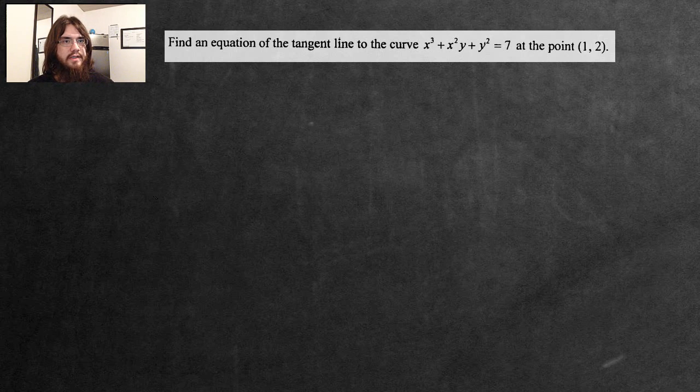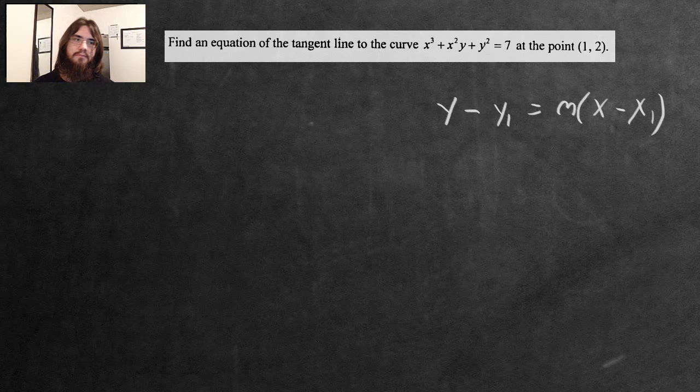Now the first thing we want to do is write the line equation, which is y subtract y₁, the first y value, is going to be equal to the slope m, multiply x, subtract the first x value, x₁. So this is the equation of a line.